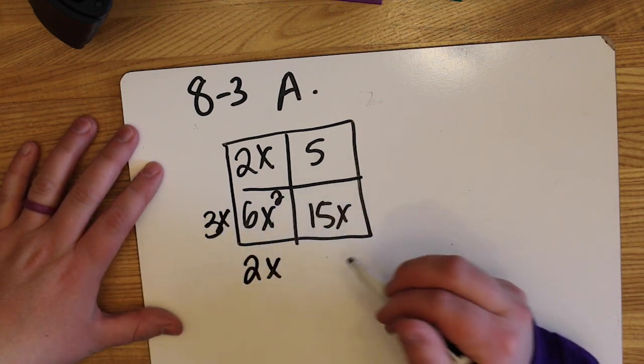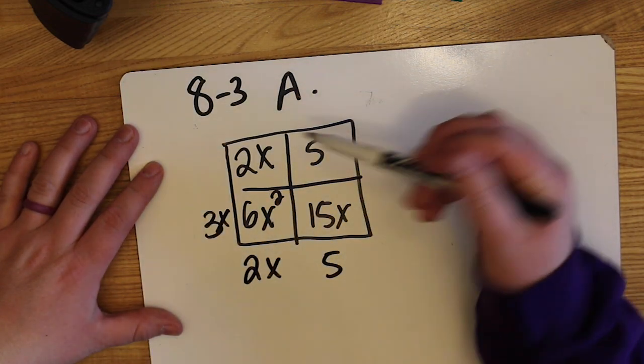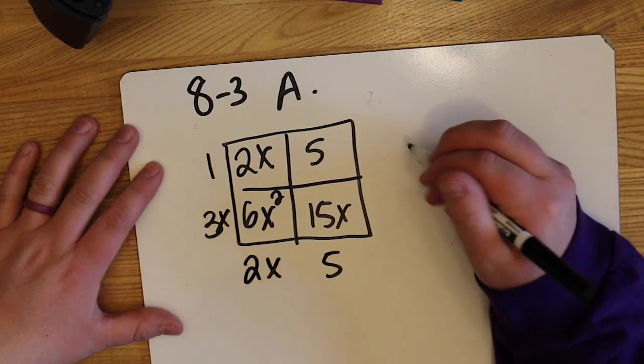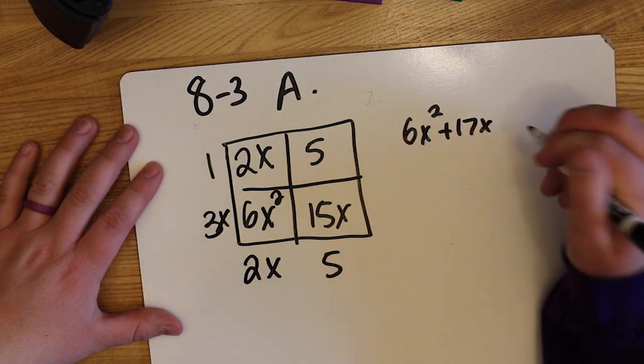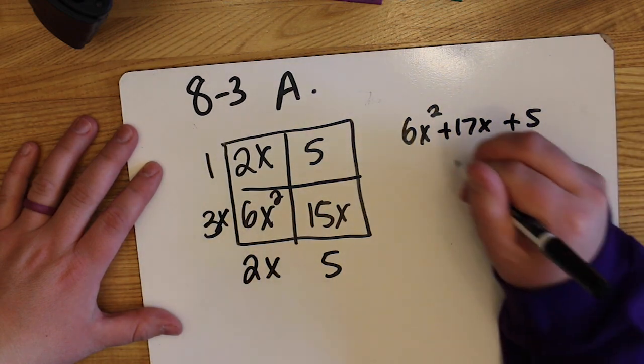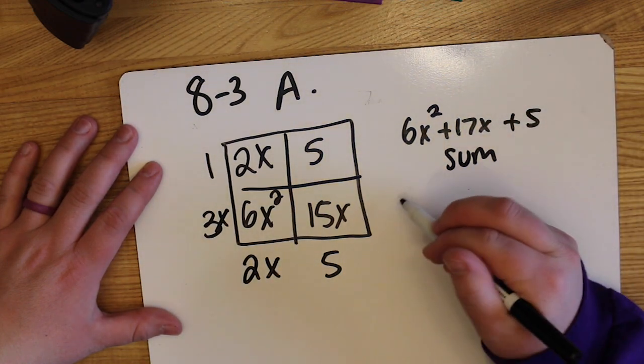2x times 3x, that's 6x squared. 3x times 5, that's 15x. 2x times 1, that's 2x. 1 times 5, that works out too. This is the sum.